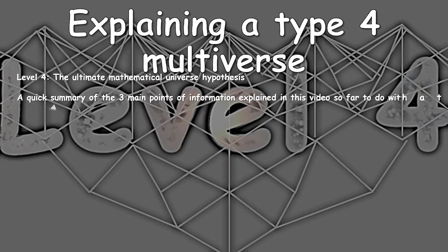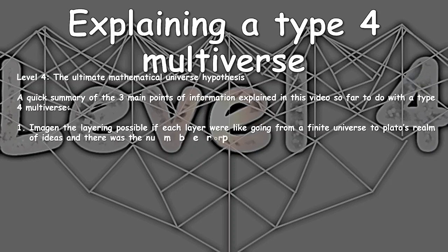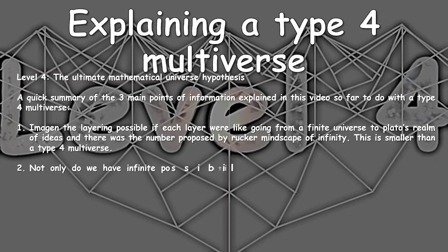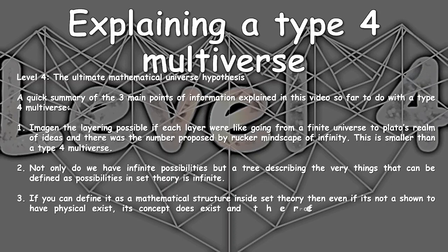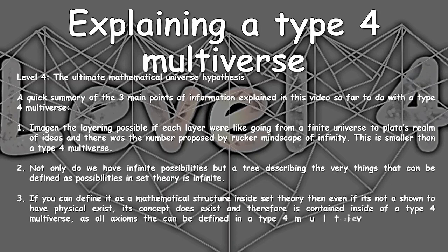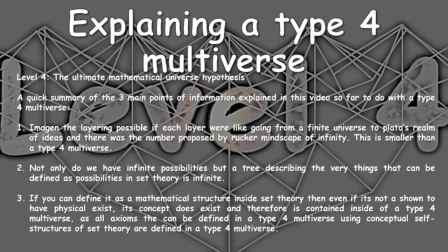Let's make a quick summary of the three main points for a Type 4 multiverse. First: imagine layering each possible layer like going from a finite universe to Plato's realm of ideas, and doing this the number proposed in Rucker's Mindscape infinity — this is smaller than a Type 4 multiverse. Second: not only do we have infinite possibilities, but the tree describing what axioms can be defined is infinite itself, with all possibilities that can be defined in set theory. Third: if you can define a mathematical structure in set theory, even if it's not shown to physically exist, its concept does exist, and is contained in a Type 4 multiverse — as all axioms that can be defined using conceptual self-structures of set theory are defined in a Type 4 multiverse.